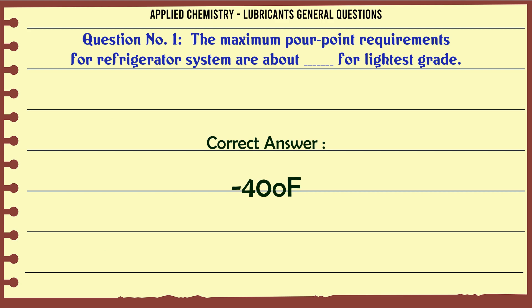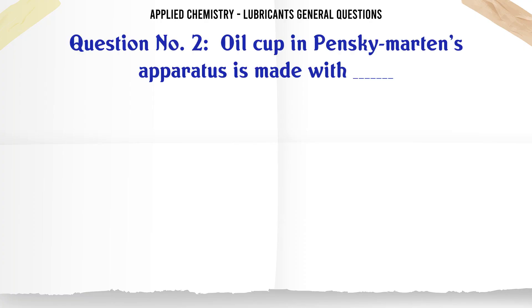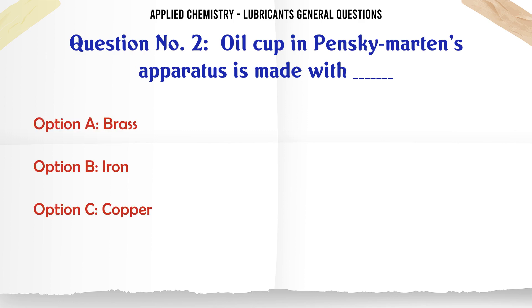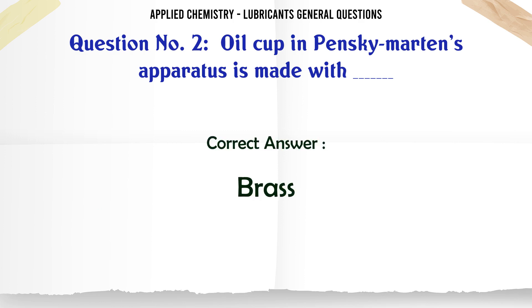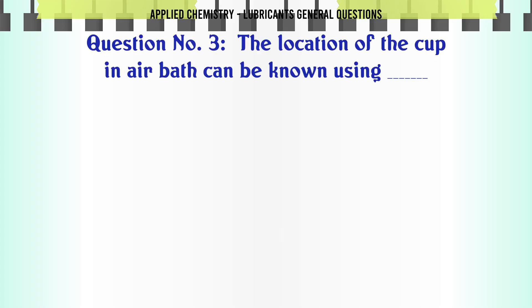The cup in the Pensky-Martens apparatus is made with: A. Brass, B. Iron, C. Copper, D. Steel. The correct answer is Brass.